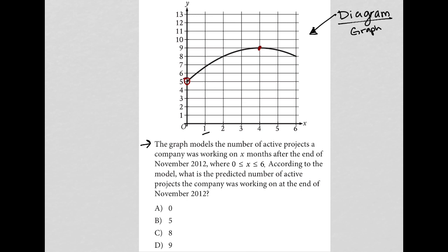So each one of these is a month after the end of November 2012. So, for instance, the number 1 would represent the end of December 2012. Number 2 would represent the end of January 2013, so on and so forth.